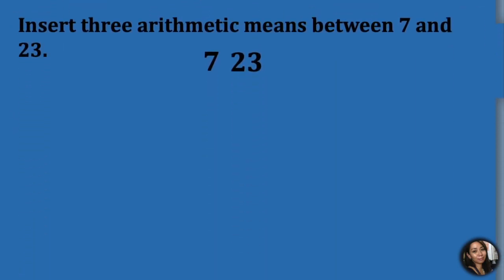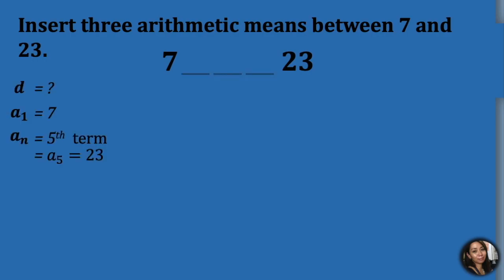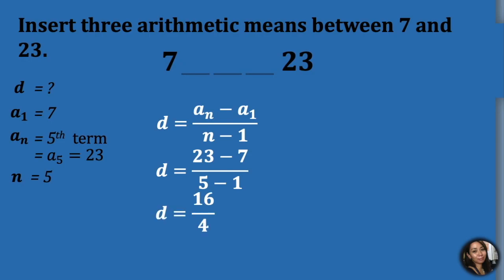Now let's insert three arithmetic means between 7 and 23. Put three blank spaces in between the numbers. Using the derived formula d equals a sub n minus a sub 1, all over n minus 1, we substitute the given. We now have 23 minus 7, all over 5 minus 1, which leads to 16 over 4. And 16 divided by 4 equals 4. Adding 4 to each term, we have completed our arithmetic means.